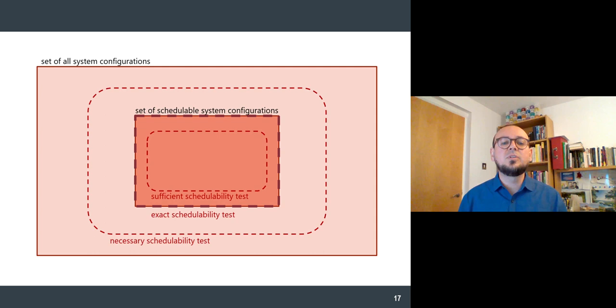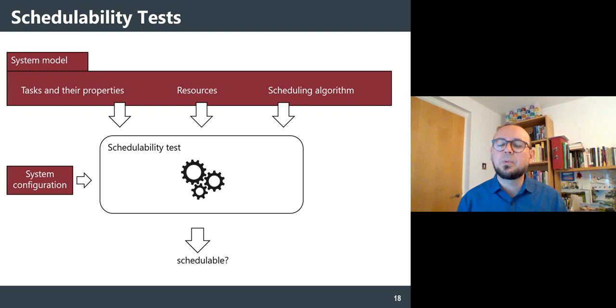As you can guess, exact schedulability tests can approximate precisely that rectangle of schedulable configurations, discriminating exactly whether a configuration is inside or outside it. We know the characteristics of these test types, but what do they actually look like?